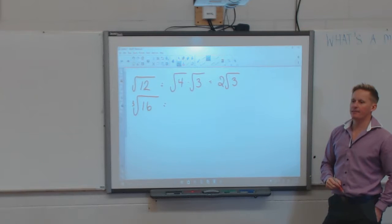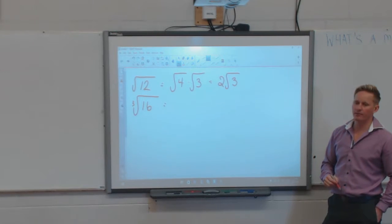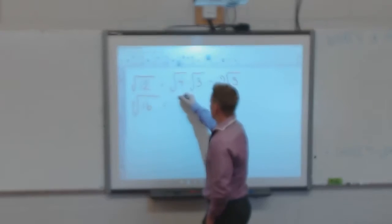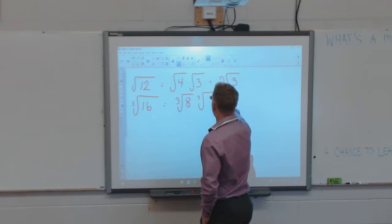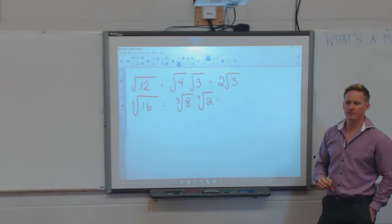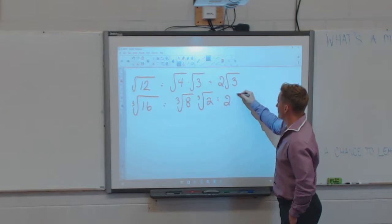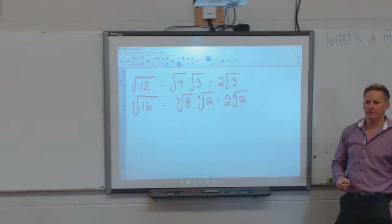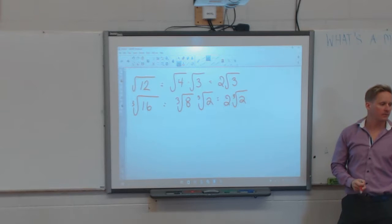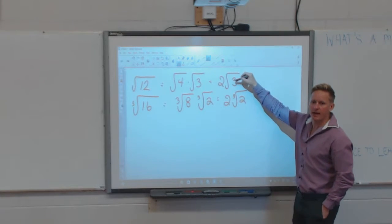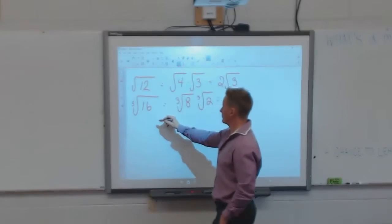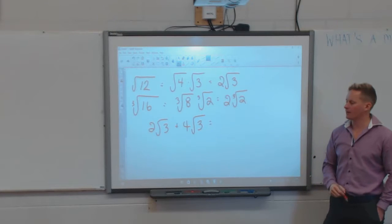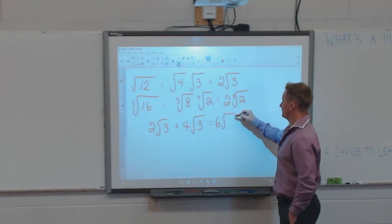We can do the same thing with cube roots. If I want to change an entire radical into a mixed one, I can find a perfect cube that goes into 16. What's a perfect cube that goes into 16? 8 does. So I have the cube root of 8 times the cube root of 2. The cube root of 8 is 2, giving me 2 cube root of 2. Can I add these two together in the way they're written right now? No — apples and oranges. In order to add them together, the radicand must be exactly the same in both cases.